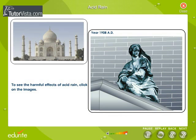Harmful effects of acid rain. Acid rain is corrosive and harmful for both living and non-living things. It gradually destroys living tissues, eats up cement, limestone and marble of buildings and monuments, and corrodes steel and other metals too.